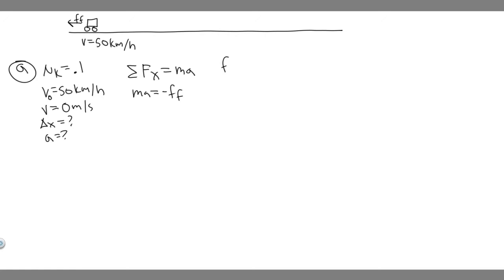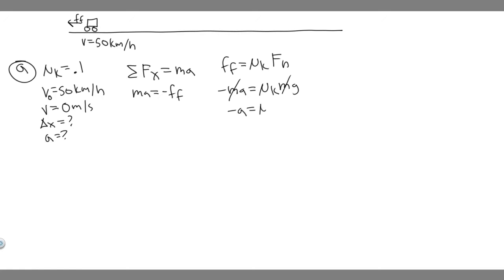We know mu sub k, and F sub n is just mg, because the sum of forces in the y direction gives F sub n equals mg. So substituting in, minus ma equals mu sub k times mg. Notice we're not given the mass, but the masses cancel. So minus a equals mu sub k times g, which gives minus a equals 0.1 times 9.8. Therefore, a equals minus 0.98 meters per second squared.